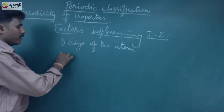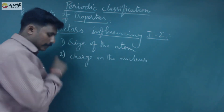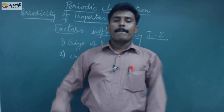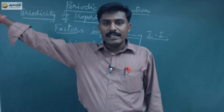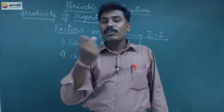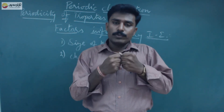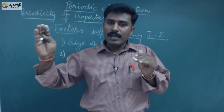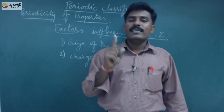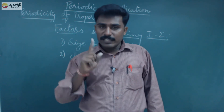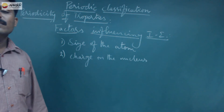The second factor is charge on the nucleus. In the second shell, the number of electrons increases: 1, 2, 3, 4, 5, 6, 7, 8 — the number of electrons in the second shell increases, increasing nuclear charge. So ionization energy increases. Size decreases, so ionization energy increases.